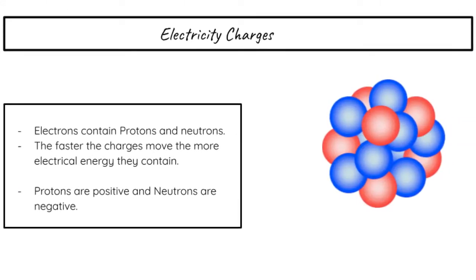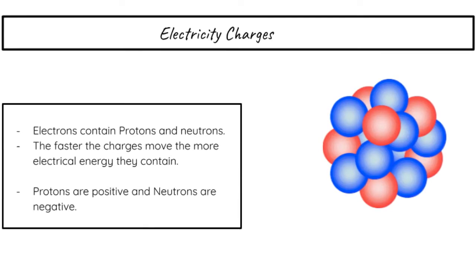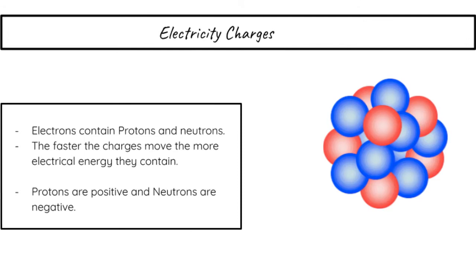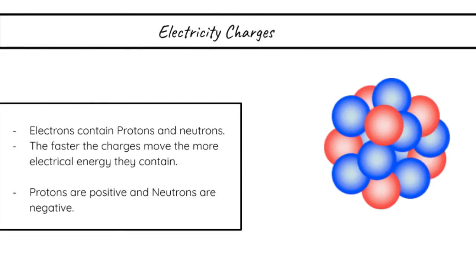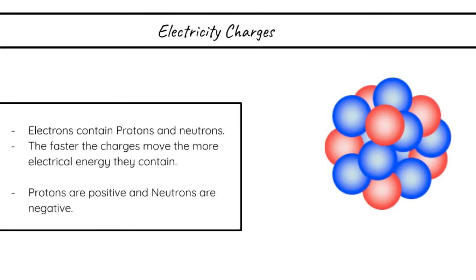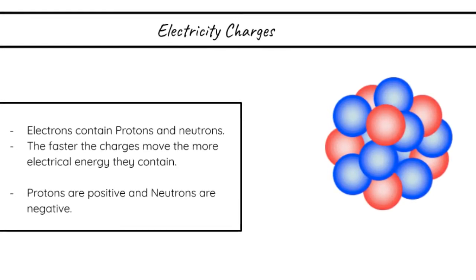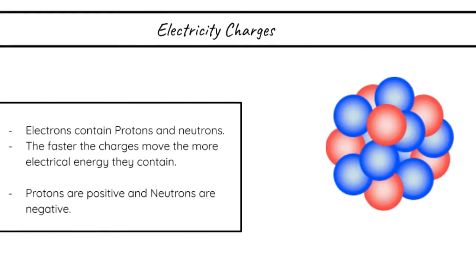Electricity charges. Electrons contain protons and neutrons. Protons are positive and neutrons are negative. In this image, you can see that there are red charges and there are blue charges. The red, of course, stand for negative. The blue stand for positive. The faster the charges move, the more electrical energy they contain.